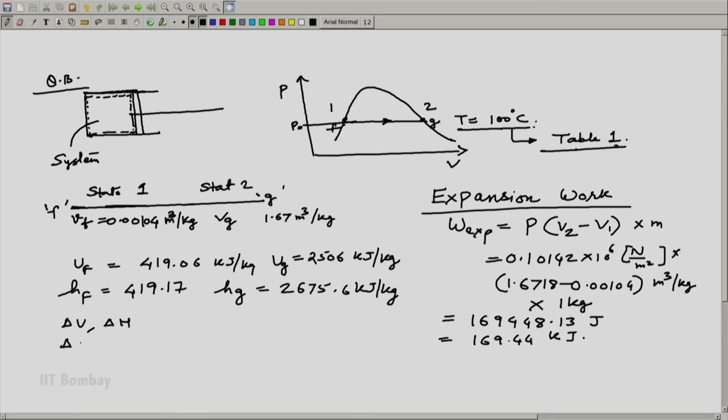Delta U is nothing but change in thermal energy which we have just calculated. We have seen that M into UG minus UF which is equal to, if I put these values of UG and UF here, I will get around 2086.94 kilojoule which is nothing but actually UFG because this is per kg.